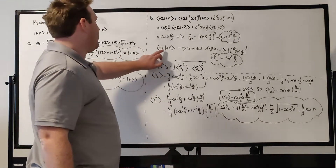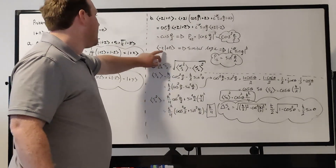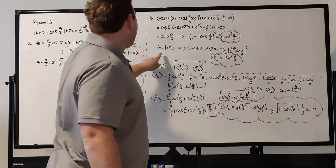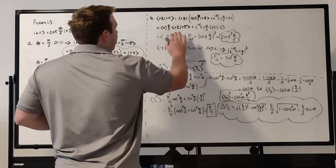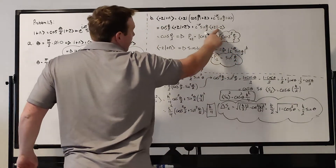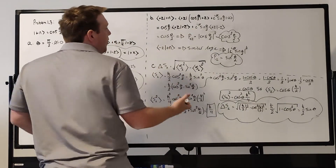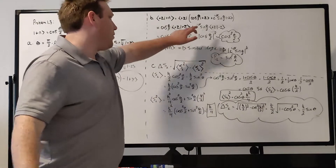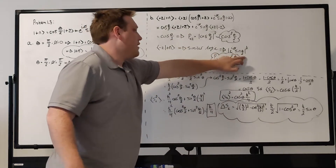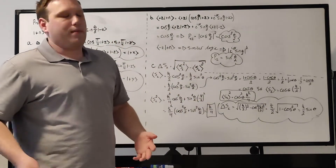By similar logic, to find the probability of measuring −ℏ/2 — meaning the state |−z⟩ — we take the inner product ⟨−z|+n⟩. Replacing |+z⟩ with |−z⟩, the cos(θ/2) term becomes zero and the sin(θ/2) term survives, leaving e^(iφ)sin(θ/2). When you take the magnitude squared of an imaginary exponential like e^(iφ), it equals 1, so we're left with sin²(θ/2) as the probability of measuring −ℏ/2.